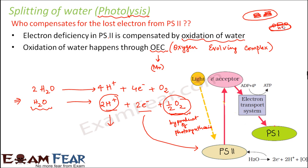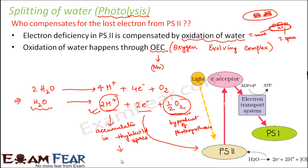The hydrogen ions produced during water splitting accumulate in the thylakoid space — the inside portion of the thylakoid membrane, also called the thylakoid lumen. This accumulation of H⁺ ions helps develop the proton gradient. Due to water splitting, a lot of protons accumulate in the thylakoid space, increasing the proton concentration inside.